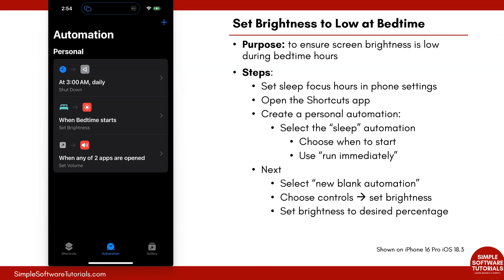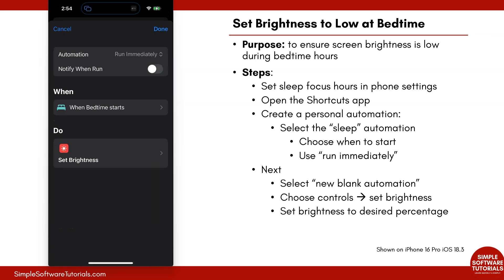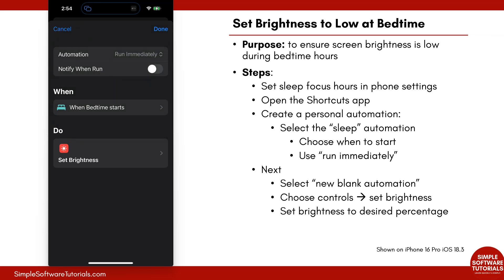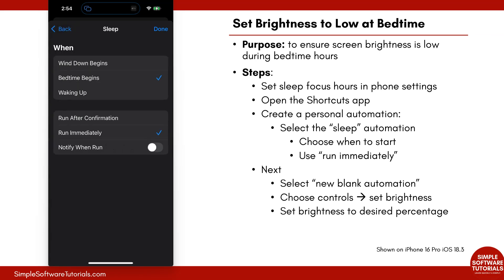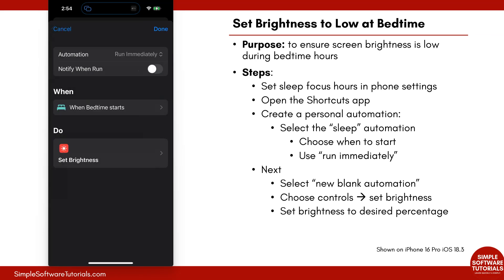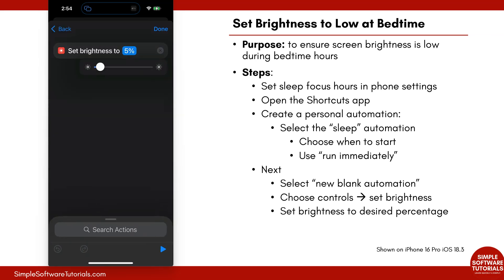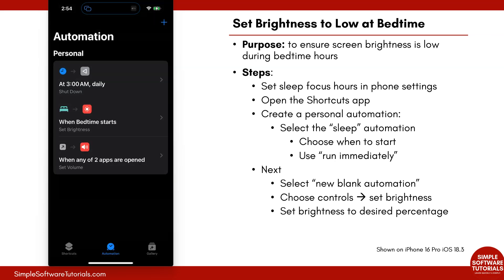It's saved right here — when bedtime starts, it will set the brightness. If you need to make any changes, tap on the shortcut. You can change whether it runs after confirmation, or turn it off temporarily. You can change when it triggers, and if 5% isn't bright enough, tap under the Do section, Set Brightness, and change it to 10% or zero, then tap Done.